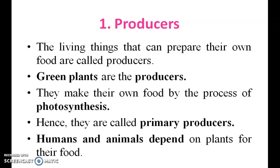First, we will see producers. The living things which can prepare their own food are called producers. For example, plants are the producers. They make their own food by the process of photosynthesis; hence they are called primary producers. Humans and animals depend on plants for their food.